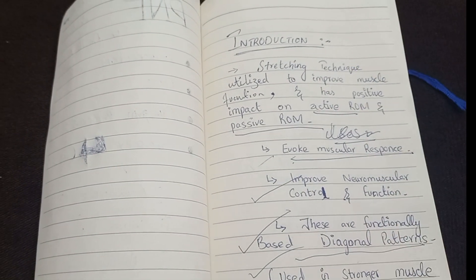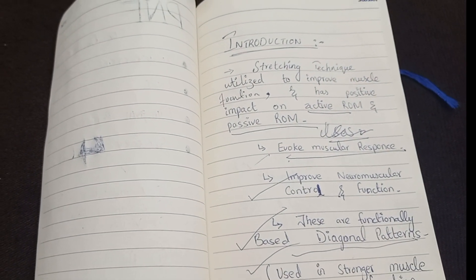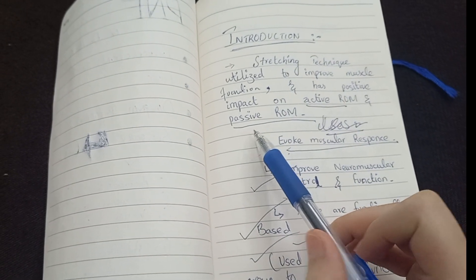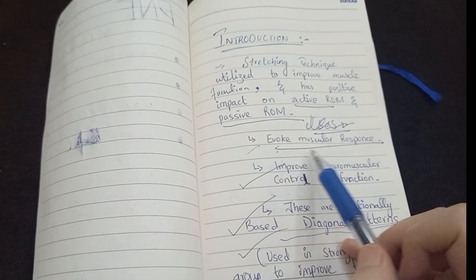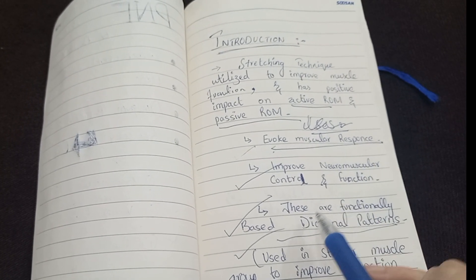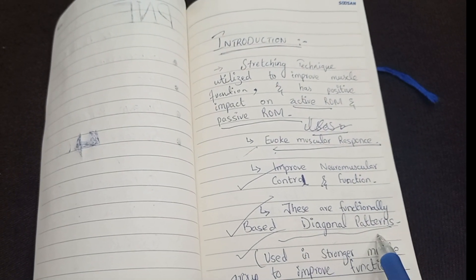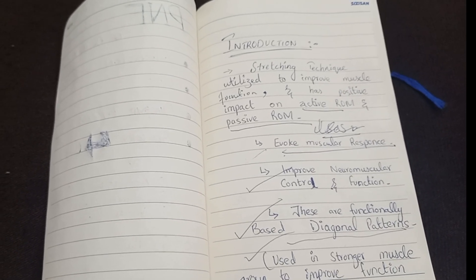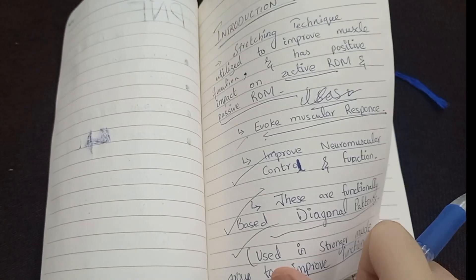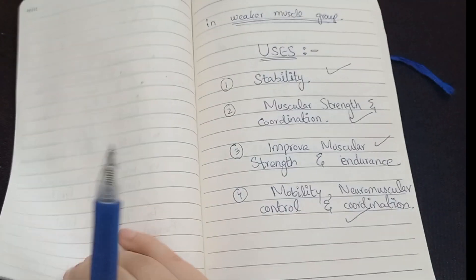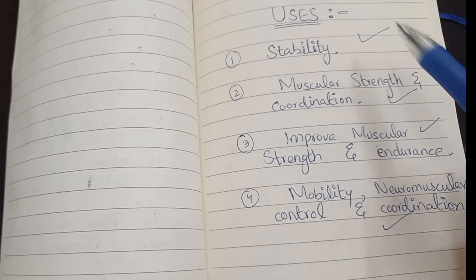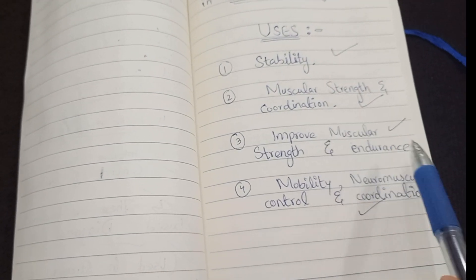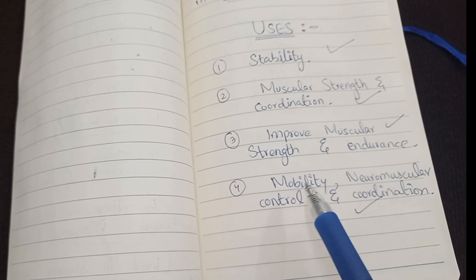Introduction: PNF are stretching techniques utilized to improve muscle function and have a positive impact on both active range of motion and passive range of motion. They evoke muscular response, improve neuromuscular control and function, and use a functionally based diagonal pattern in stronger muscle groups to evoke or improve function in weaker muscle groups. Uses include stability, muscular strength and coordination, improved muscular strength and endurance, mobility, neuromuscular control and coordination.